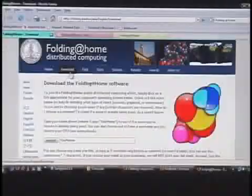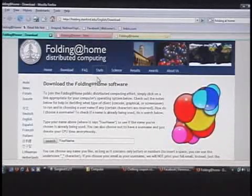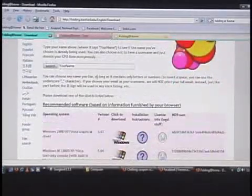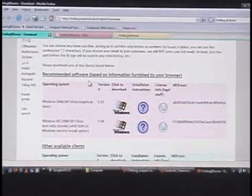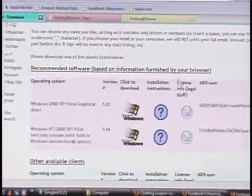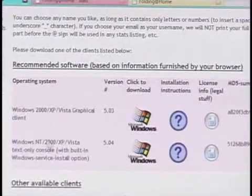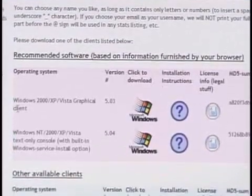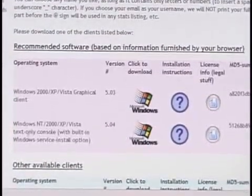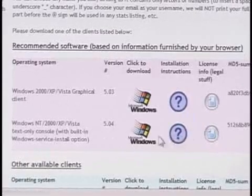I want to point out, too, on the download page, they've redone the Folding at Home website, actually. It is a pretty nice update. Take a quick look here. This is the download page. When you do surf to the download page, now it provides a recommended software based on information furnished by your browser. It actually provides recommended downloads for you. So you have your graphical client, and as we always recommend, the console-only version if you can. However, the graphical client's kind of nice because you can run it as a screensaver if you don't want it running 24/7.